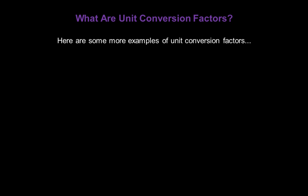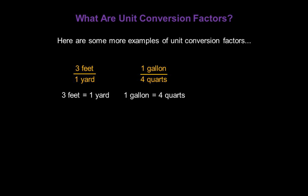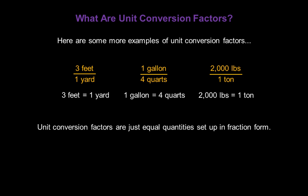Here are some more examples of unit conversion factors. Three feet over one yard means three feet equals one yard. One gallon over four quarts means one gallon is the same as four quarts. Two thousand pounds over one ton means two thousand pounds equals a ton. Unit conversion factors are just equal quantities that are set up in fraction form.